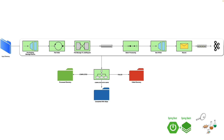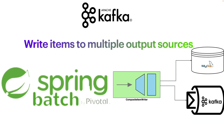So how can we implement this using Spring Batch? Of course there are different approaches we can follow, but using Spring Batch we can take advantage of the Composite Item Writer. A Composite Item Writer is simply a class that allows you to write items to multiple output sources in a single step. In our example, we are going to read from a file and use the Composite Item Writer to write first into MySQL and then to Kafka.